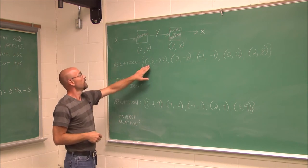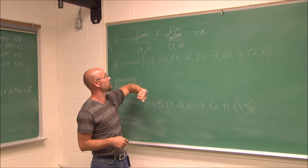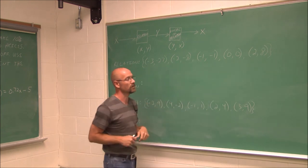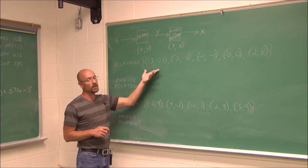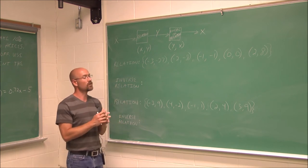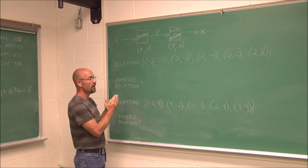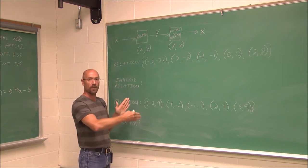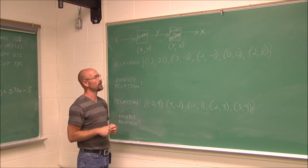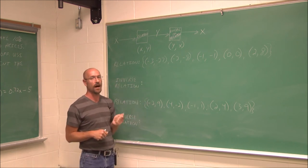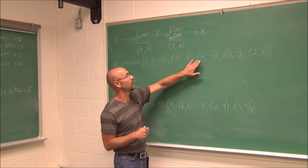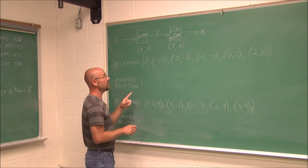Let's look at this relation: the set of ordered pairs negative 3, negative 27; negative 2, negative 8; negative 1, negative 1; 0, 0; and 2, 8. First, is it a function? Recalling the vertical line test — essentially the x value cannot repeat. I have x values of negative 3, negative 2, negative 1, 0, and 2 — all unique. This is a function.